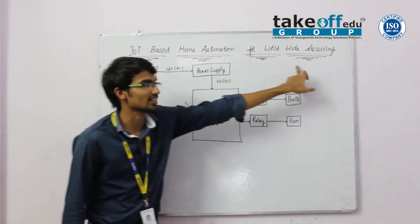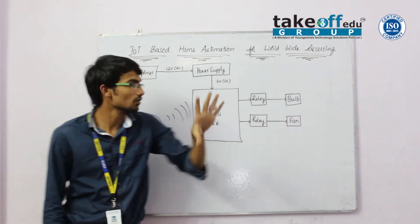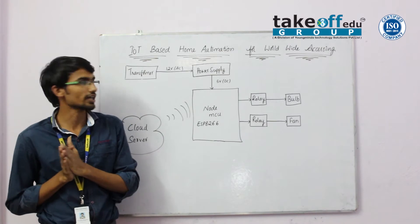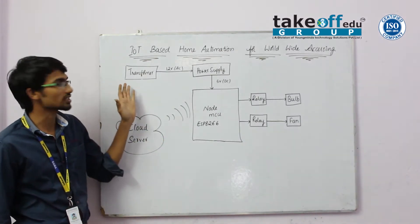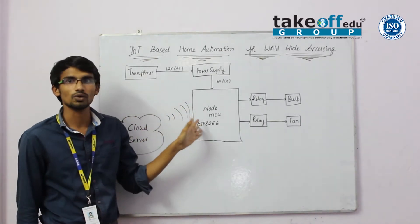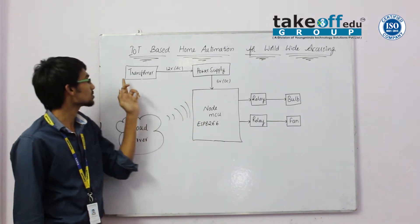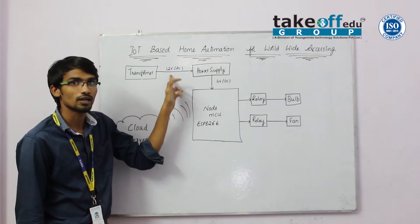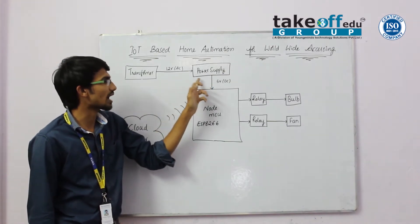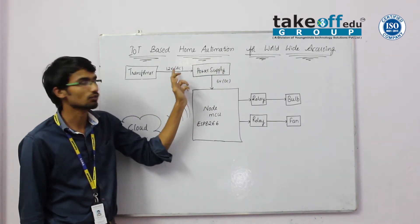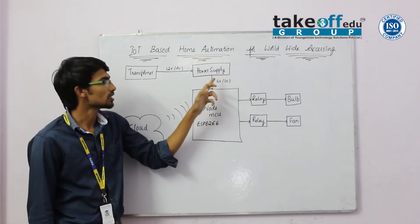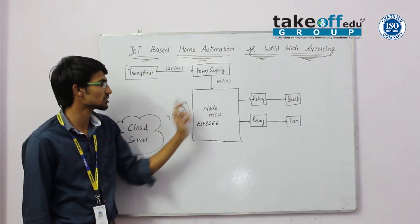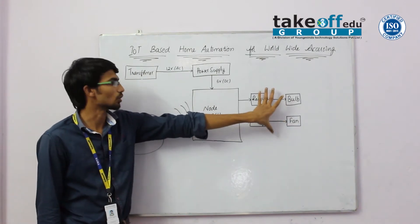Worldwide access means we can control home automation from anywhere in the world. In this project, I am using a NodeMCU Wi-Fi module. I am using a transformer as the power supply, which gives the supply to the AC-to-DC converter. A separate power supply board provides power to the NodeMCU, which controls the whole load.